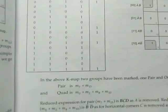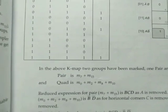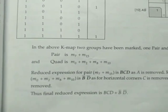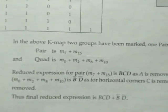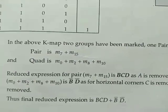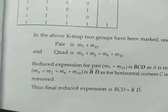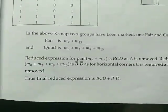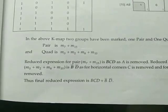Then finally this pair is formed. The final reduced expression is B'D' + BCD. This is the final answer for this problem.